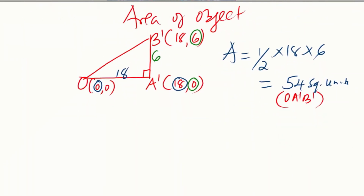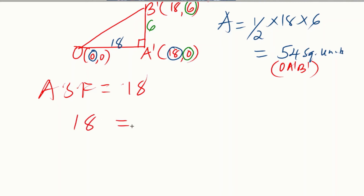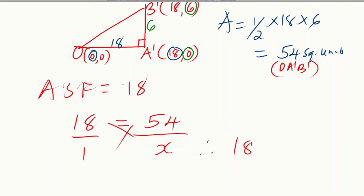Now applying the relationship between the matrix of transformation and area: the area scale factor equals 18, and this equals the area of the image (54) divided by the area of the object (X). Substituting and cross-multiplying gives 18X = 54. Dividing both sides by 18, we get X = 3 square units.